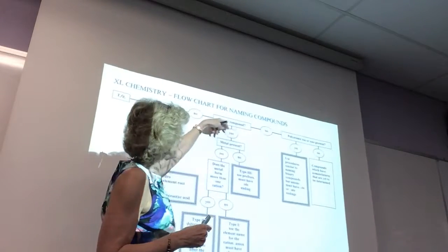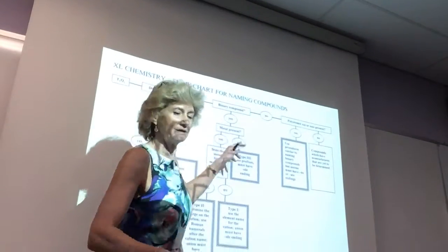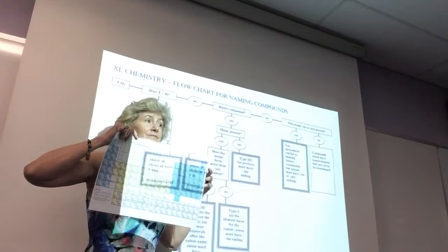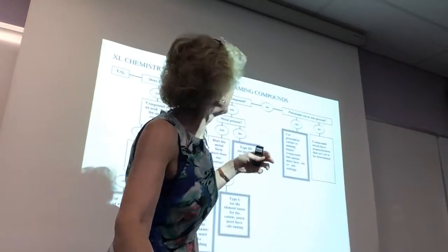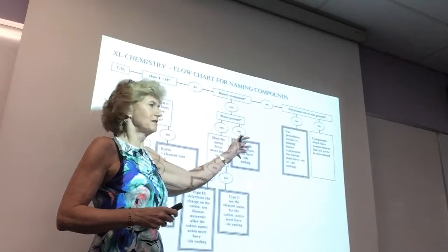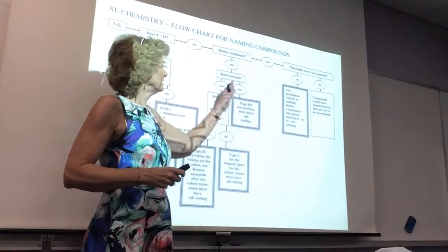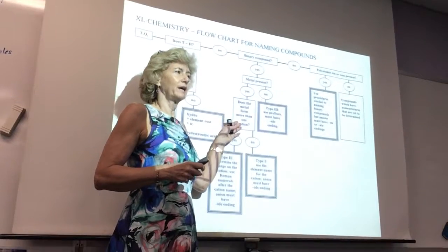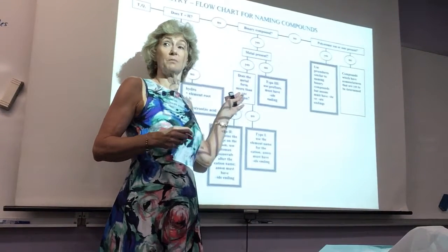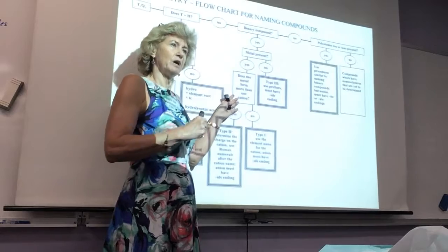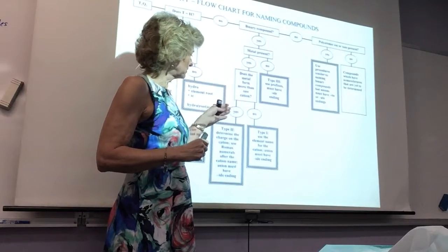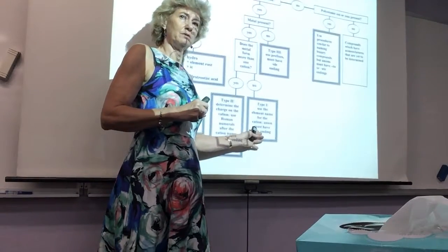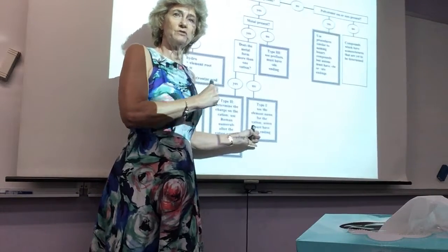Yes and no. If it's yes, you go, is a metal present? Where are the metals? Which side? Left side, good. So if it's on the left side, there's a metal present. If there's not, we do this naming scheme. If there is a metal present, you say, does the metal form more than one cation? Metals form cations, positive charges. I'll show you how we know that. If the answer is yes, you use this naming scheme. If the answer is no, you use this one.